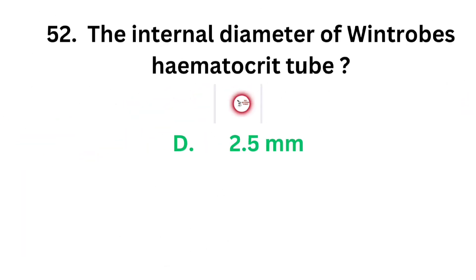The correct answer is option D, 2.5 mm. The internal diameter of Wintrobe's hematocrit tube is 2.5 mm.